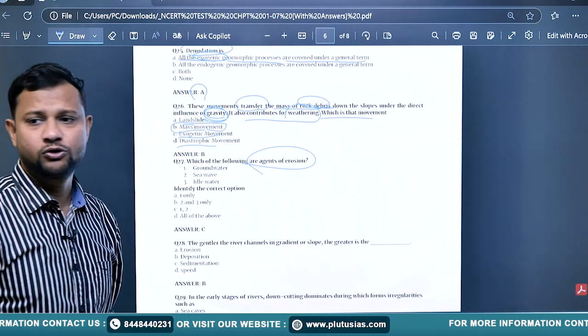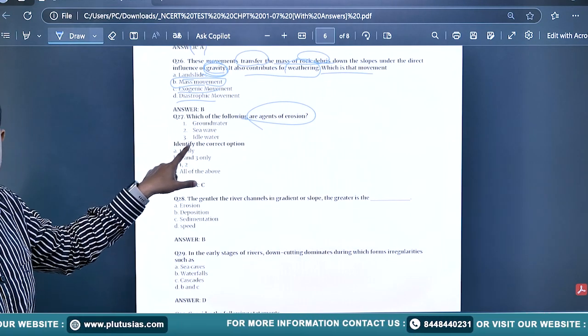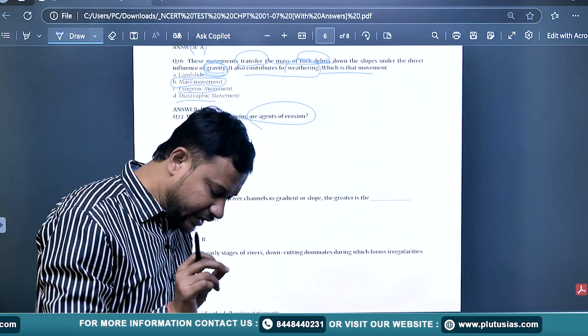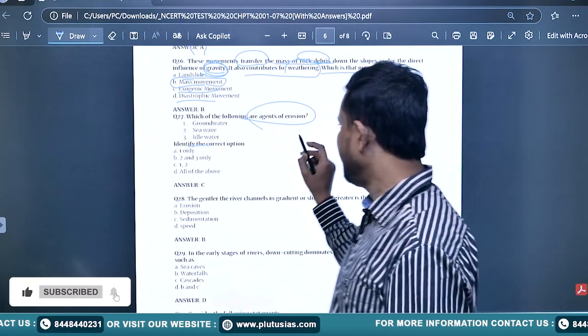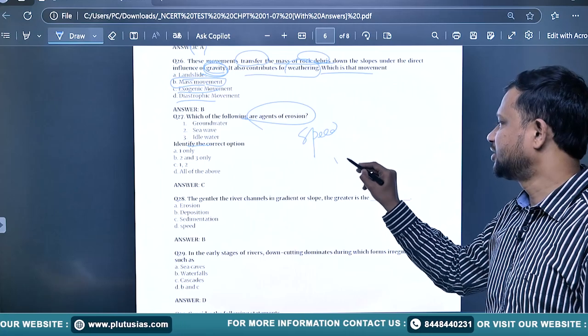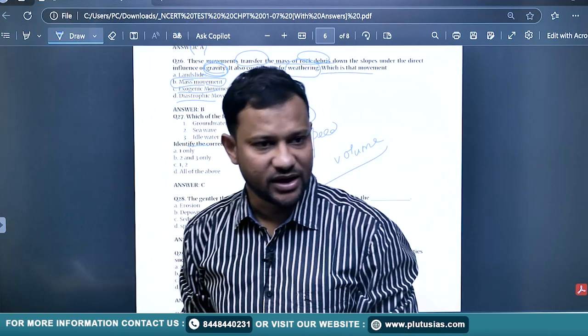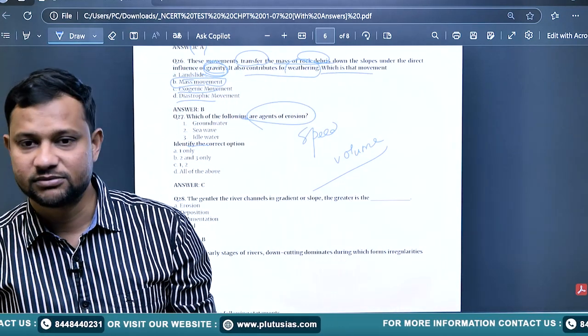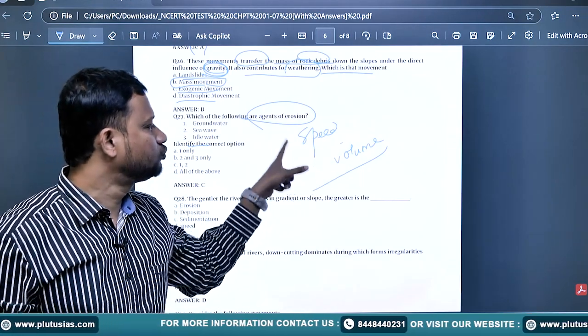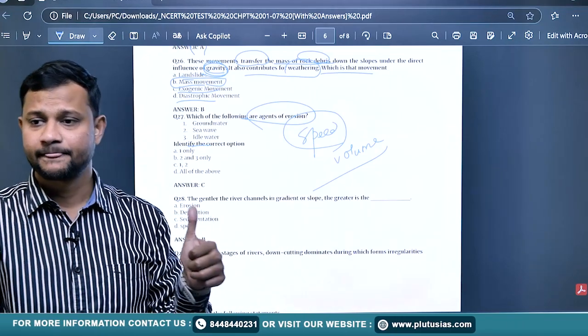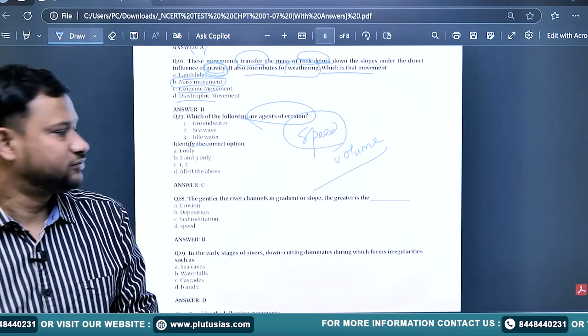Which of the following are agents of erosion? Groundwater - is it an agent of erosion? Seawater? Tidal water - no, why? For any phenomenon to qualify as an erosional agent, it needs two things: speed and volume. Tidal water is losing on the count of speed. Glaciers, winds, waves, and currents. The answer should be C - one and two.